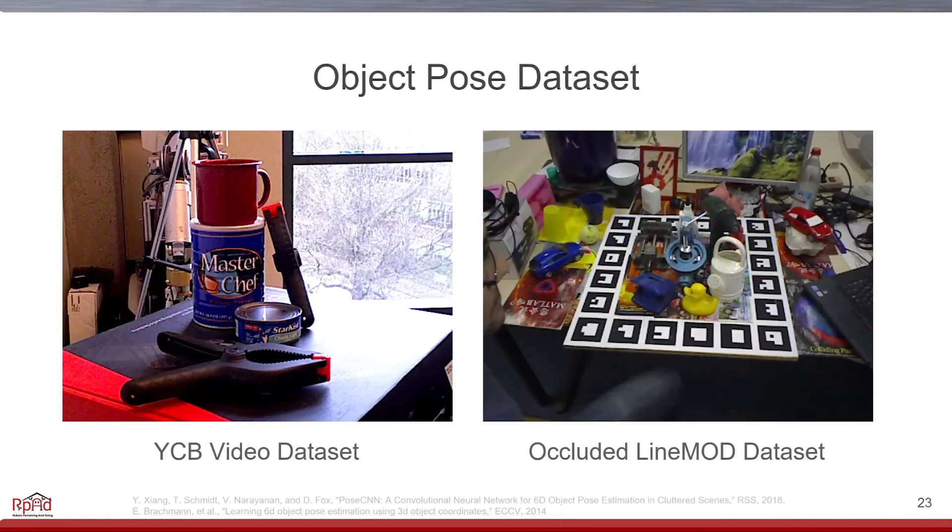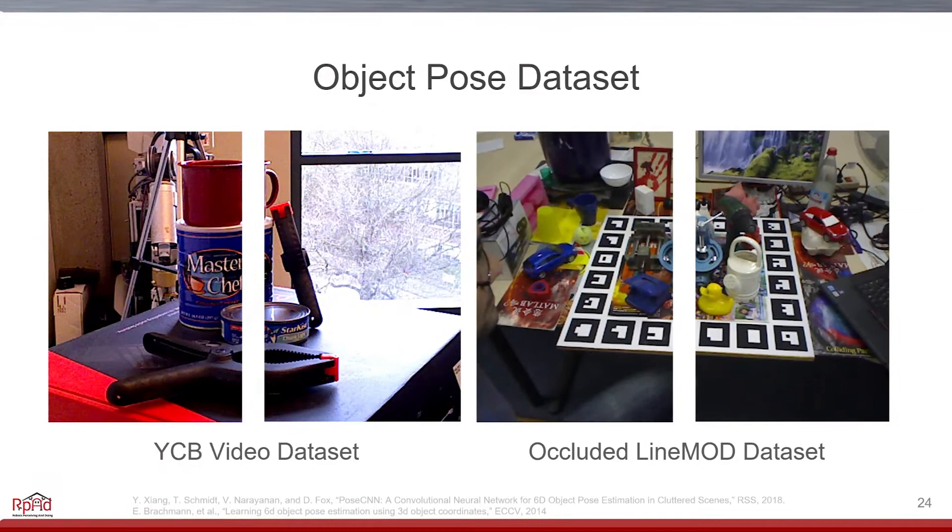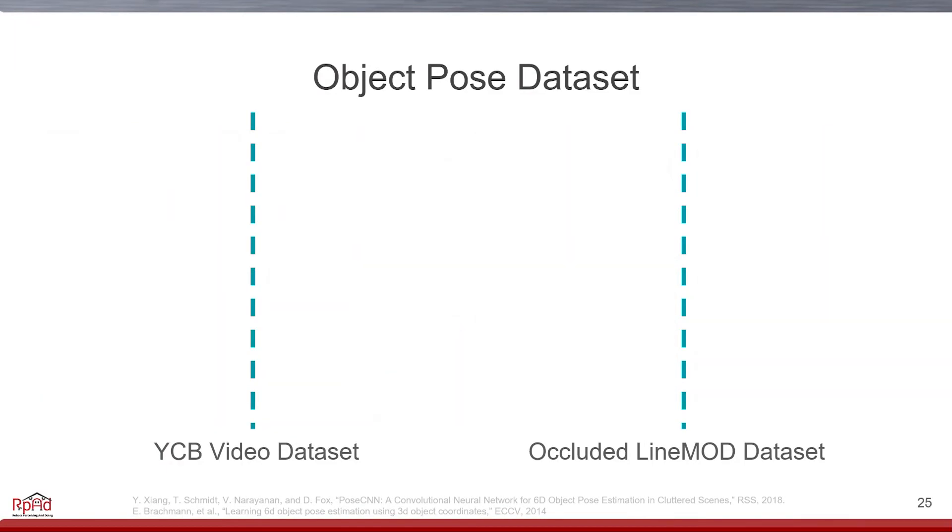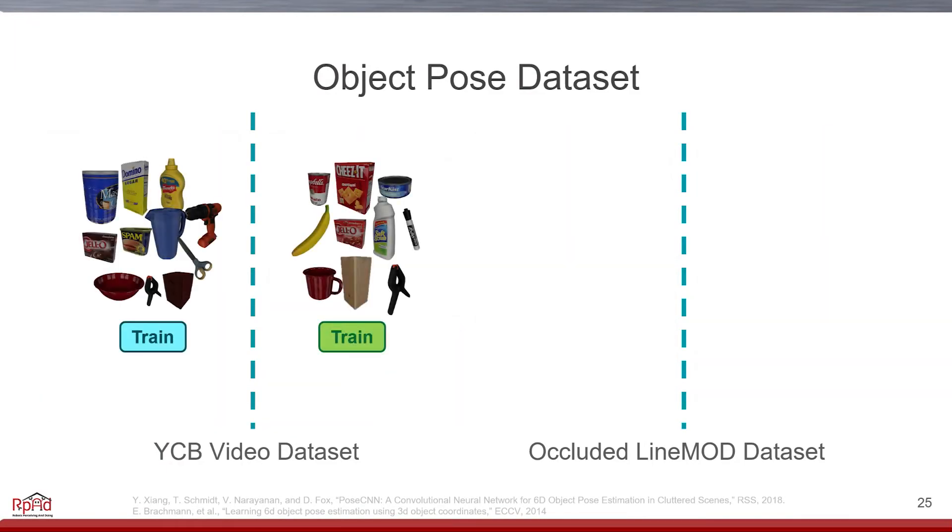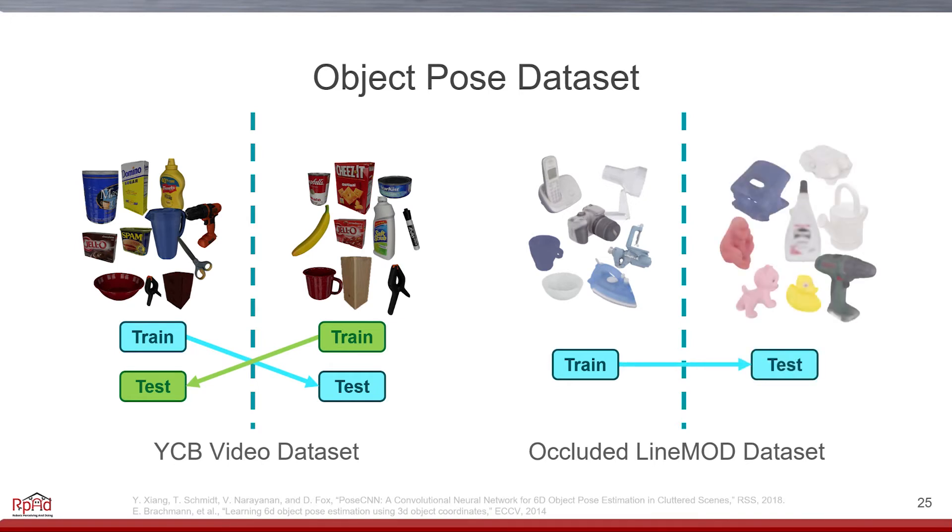Now remember the goal of this work is to generalize to objects we have never seen before. To evaluate on this task, we use two standard pose estimation datasets, YCB video and occluded LineMOD. We split the dataset in half, training on one half of the objects and testing on the other. For YCB video, we train two estimators. Each of these trains and tests on complementary object sets. As for occluded LineMOD, we train on LineMOD objects that are not present in the occlusion dataset, and test using the remaining objects.